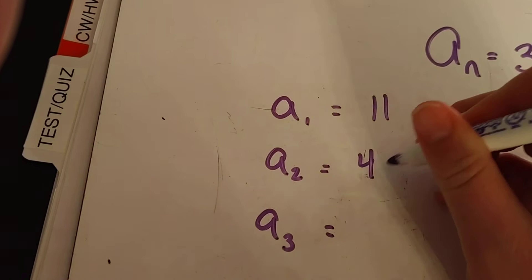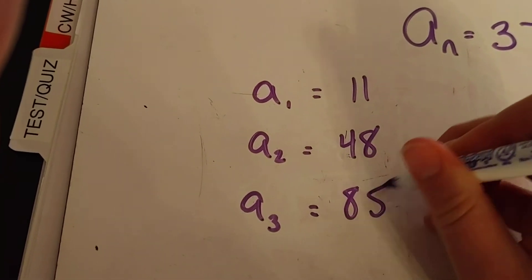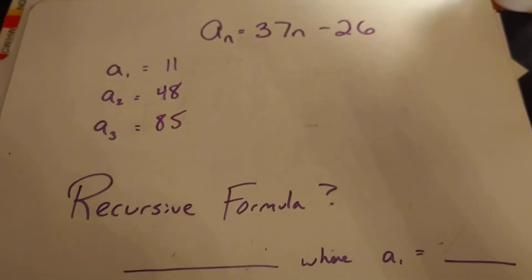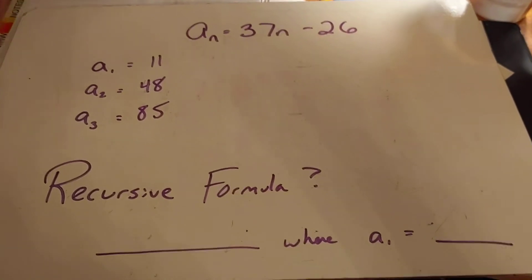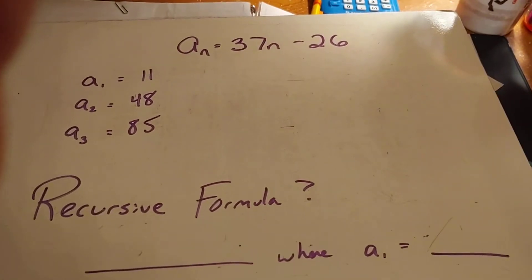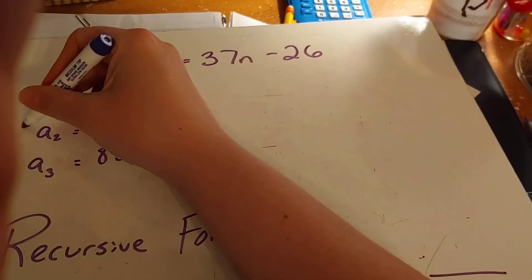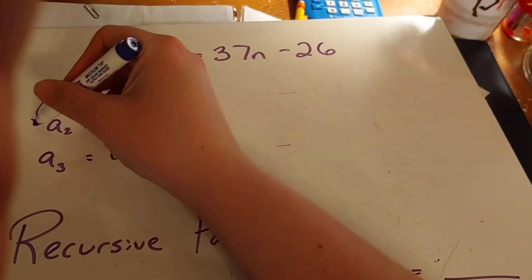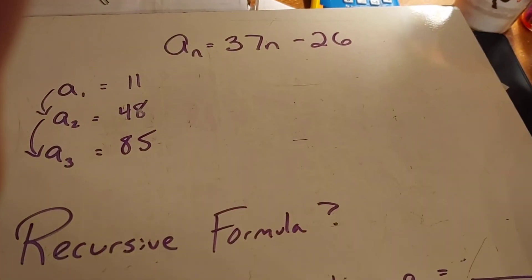So we got 11, 48, and 85. Alright, but now I need to write a recursive formula. So I really need to figure out the pattern. How do I get from 11 to 48, and then from 48 to 85?